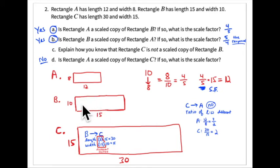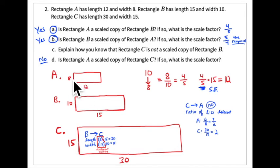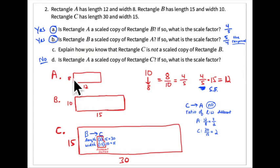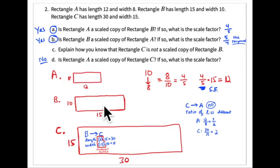So A is four fifths of B — each length is scaled by four fifths. Another way to confirm this is the ratio of width to length within each rectangle: in rectangle A, 8 to 12 is two thirds, and in rectangle B, 10 to 15 is also two thirds. Since those internal ratios match, A is a scaled copy of B. Now, is rectangle B a scaled copy of rectangle A?